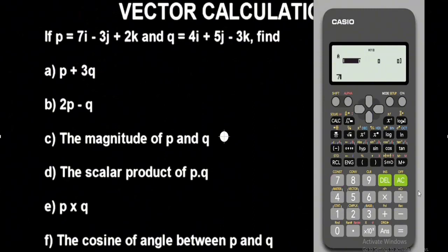For vector P: the coefficient of i is 7, so just input 7. For minus 3j, just input minus 3. And for 2k, just input 2. That's it — as I'm inputting the values they are stored on the calculator automatically.